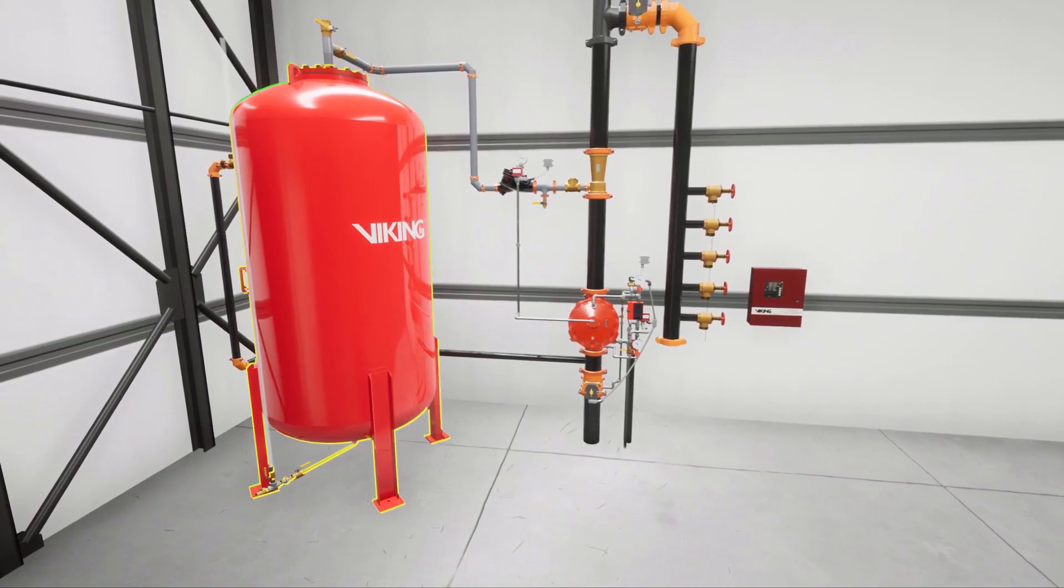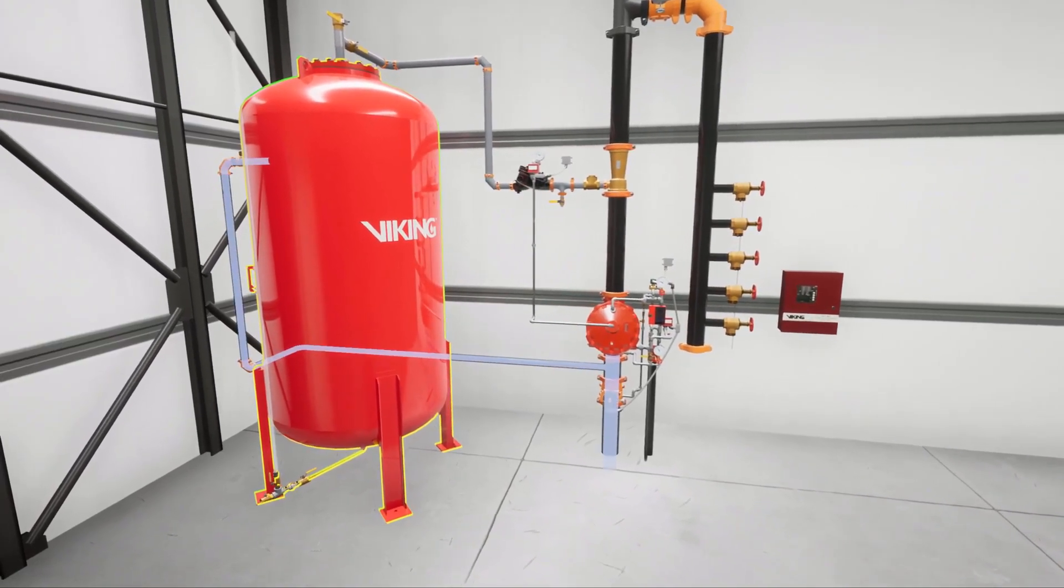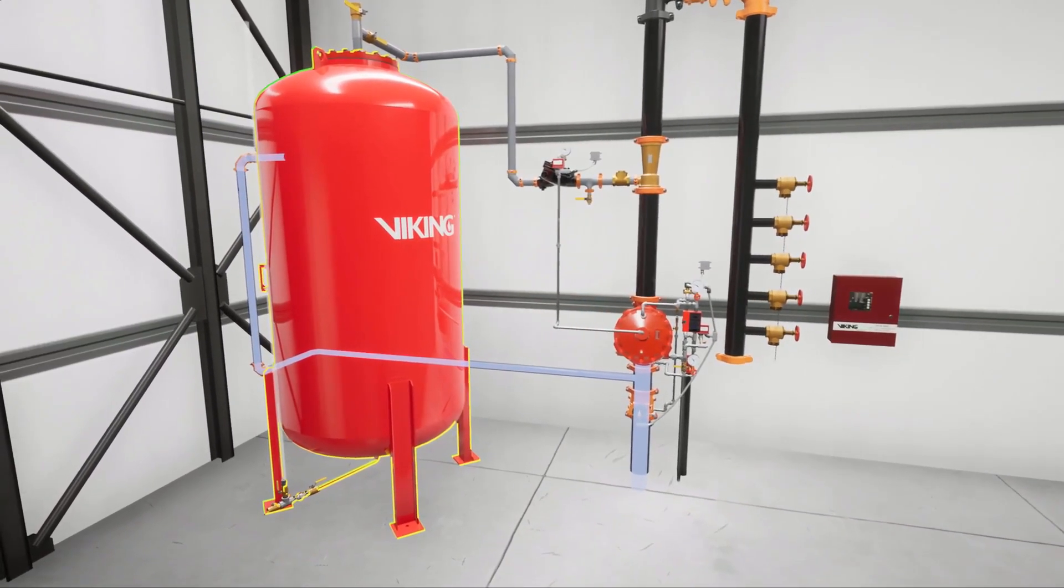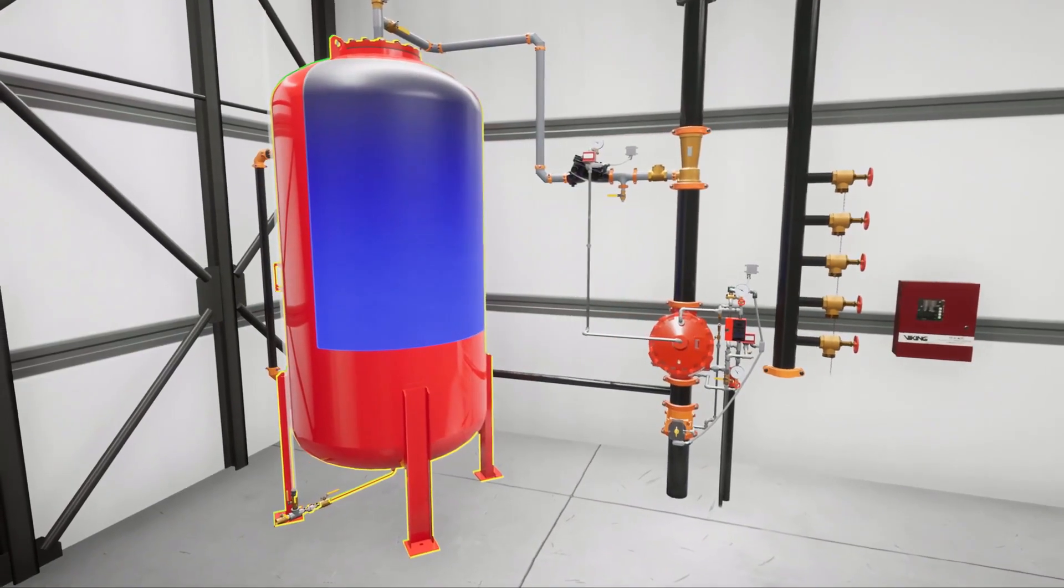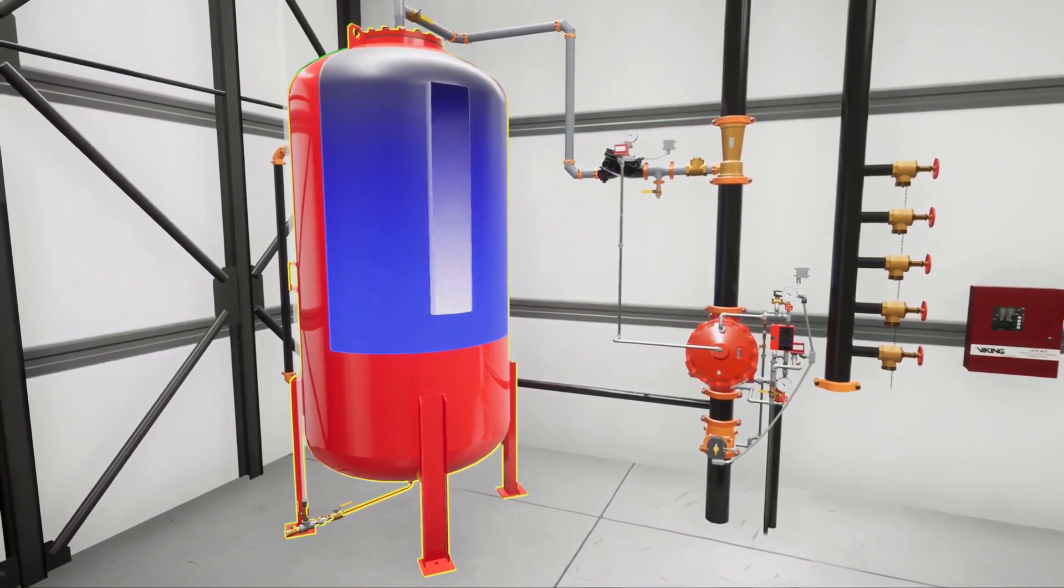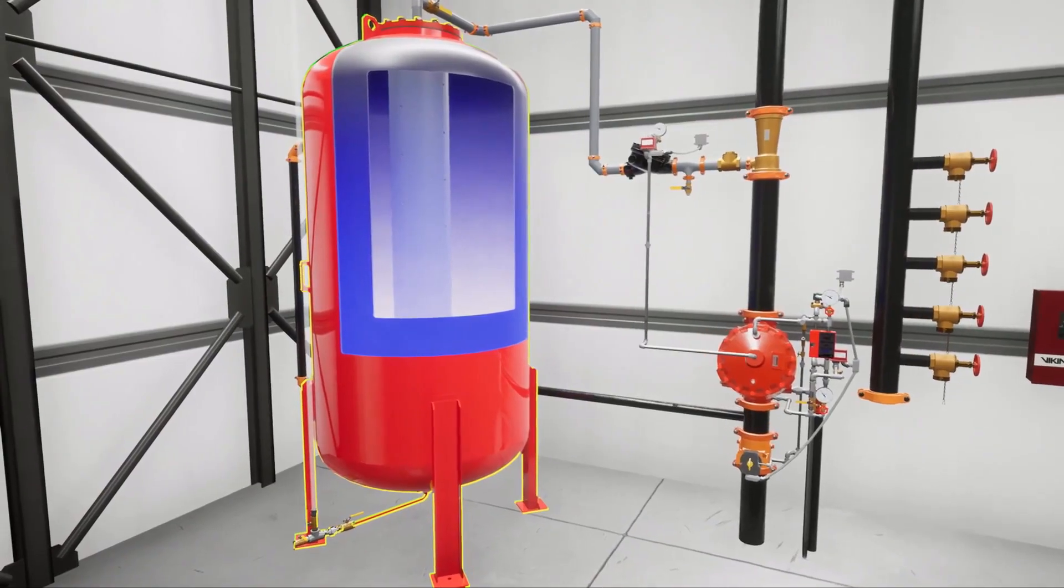A bladder tank is a device that is continually pressurized by the main water supply. The water sits between the steel shell and the rubber bladder. The bladder is filled with foam concentrate.